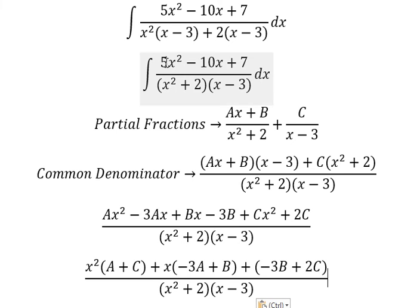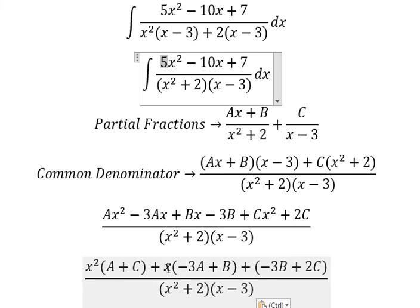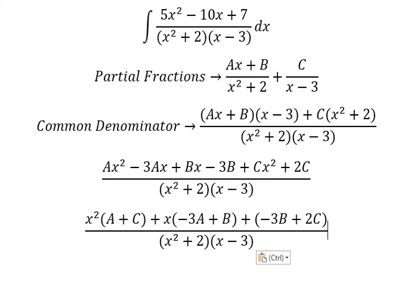Now if we compare coefficients: the coefficient of x squared is 5, so A plus C equals 5. The coefficient of x is negative 10, so negative 3A plus B equals negative 10. And similarly for the constant term. Now we create the system of equations.